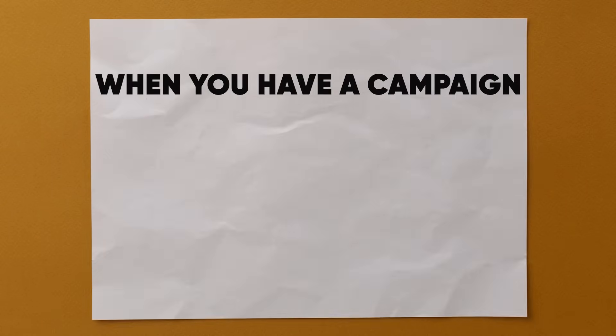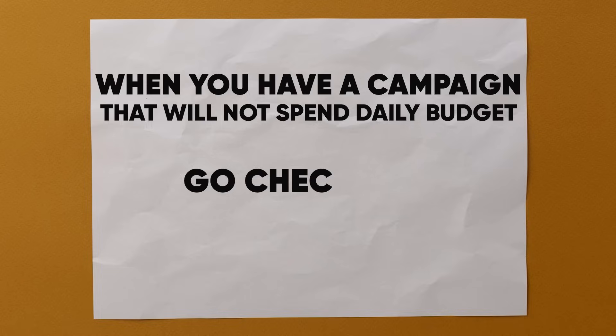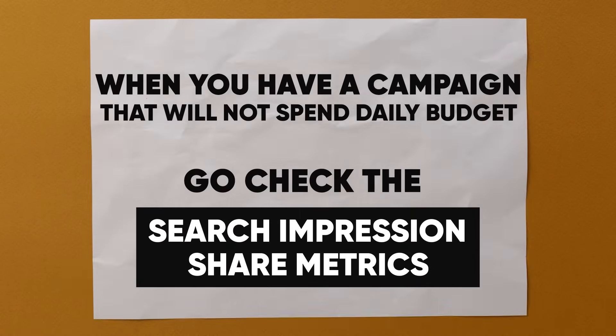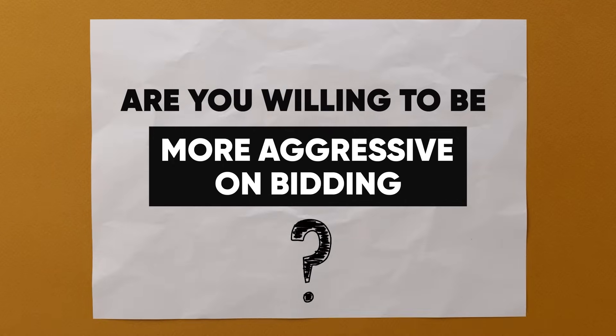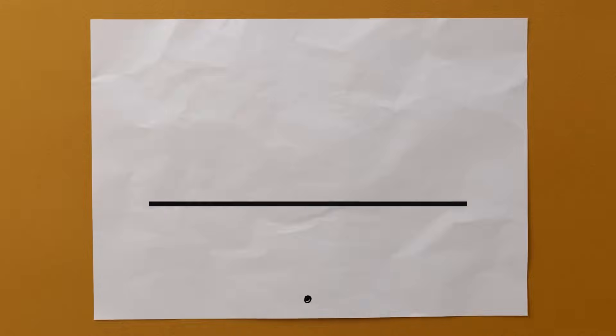So when you have a campaign that will not spend the daily budget, go check the search impression share metrics. What have you lost due to rank? Is it truly the bidding parameter you set — whether TROAS or TCPA — that's limiting you? If it is, and depending on campaign performance, if you want more volume and Google isn't spending your daily budget, you need to reevaluate: are you willing to be more aggressive on bidding? Because in order to spend more and enter more auctions, you may need to do that. Otherwise you've capped yourself with that ceiling and simply will not enter more auctions.